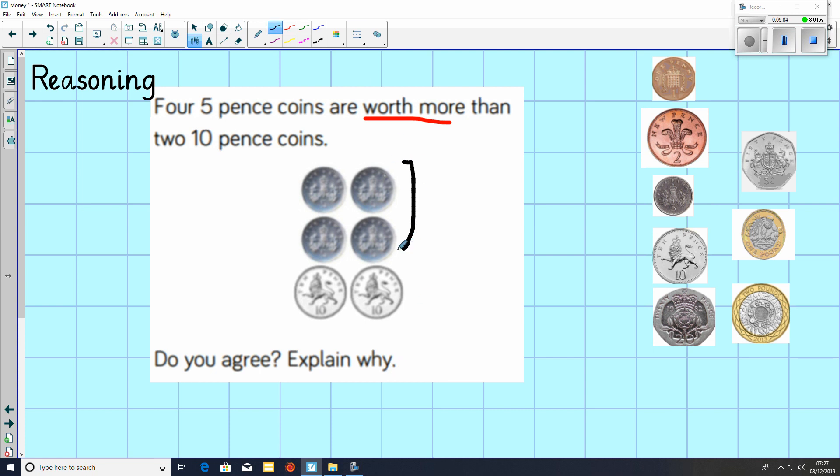4 5p coins, if we count in 5s, 5, 10, 15, 20. So that's 20 pence. And 2 10p coins, if we count in 10s, 10, 20. So the answer is, I do not agree, because they are worth the same. 4 5p coins are worth 20 pence, and 2 10p coins are worth 20 pence as well.